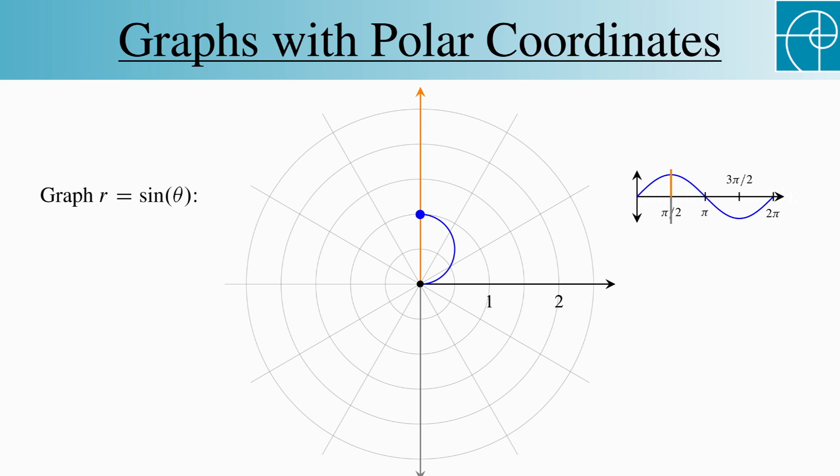From here, we look at theta from pi over 2 to pi. On that interval, sine decreases from 1 to 0. So we trace this curve, which ends up where we started.